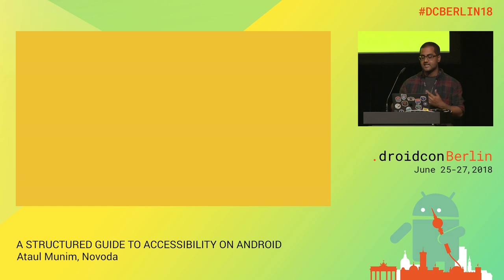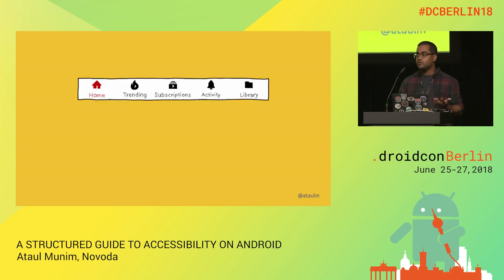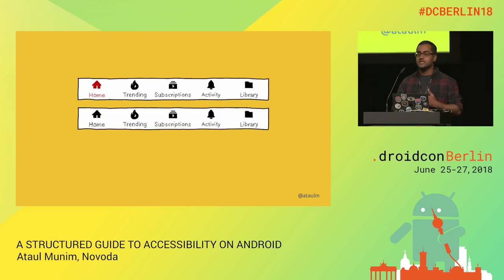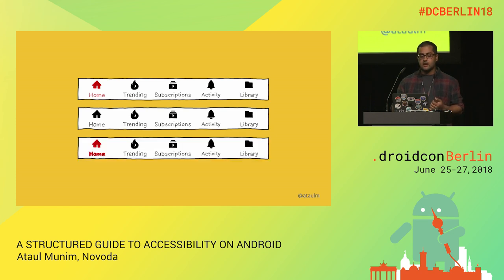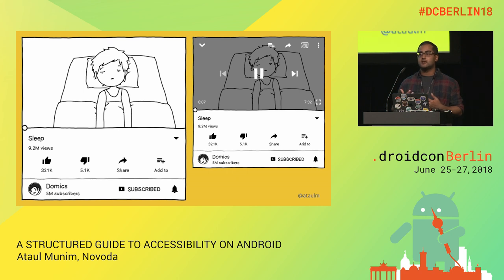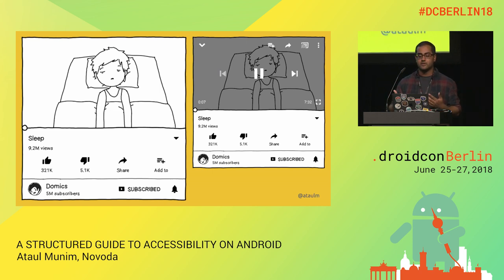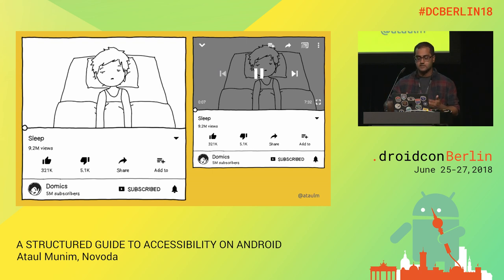I'm going to skip past the next section about making your text color considerate. There are two main points: don't convey information with color only — provide some other affordance like making it bold or underlined — and make sure you test the color contrast ratio. For example, YouTube has a gray background behind the play controls so that no matter what image or video is behind them, you can still see the controls.